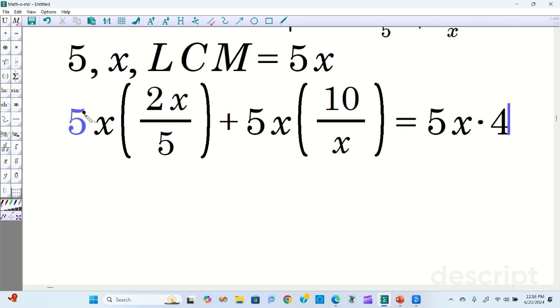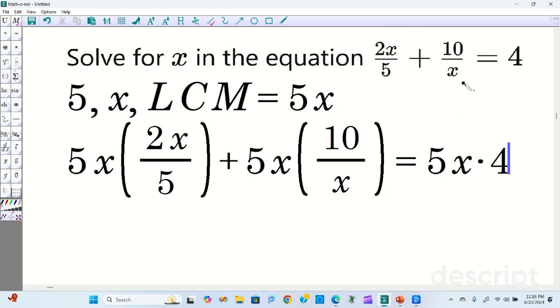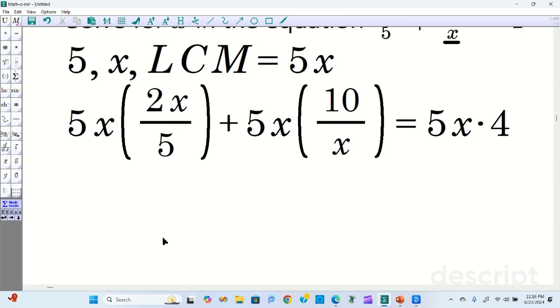Now cancel what you can. So this cancels with this. The fives cancel. This x cancels with this. Be very careful. This assumes x is not equal to 0. And also in the original right here because it's in the model, it's telling x cannot be 0.